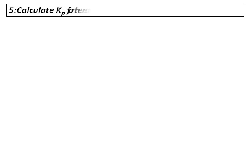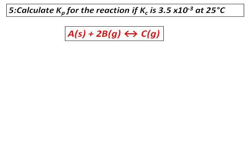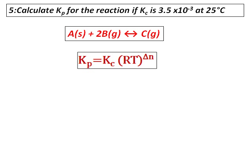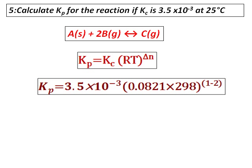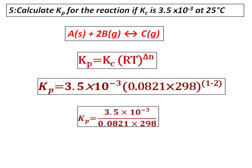Question number 5: Calculate Kp for the reaction if Kc is 3.5 times 10 to the power of negative 3 at 25 degrees Celsius. This question illustrates the case where delta N is negative. There is 1 mole on the product side and 3 moles on the reactant side, but one of the reactants is a solid, so it must not be considered. Therefore, delta N equals 1 minus 2 equals negative 1. Substitute the values for Kc, R, and temperature to calculate Kp.